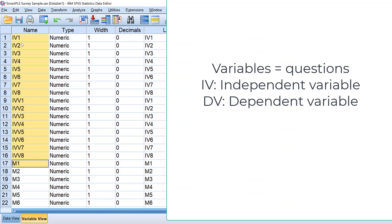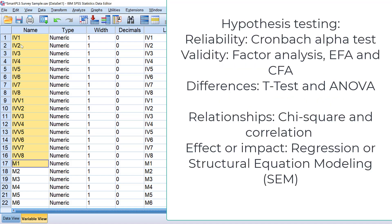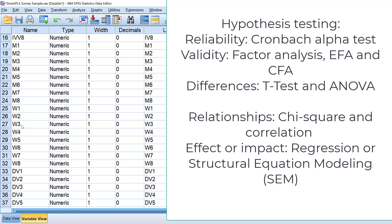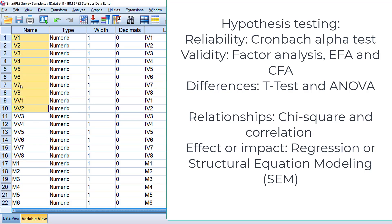The relationship among those dependent and independent variables is tested through what we call hypotheses, and the procedure is called hypothesis testing. For example, we can test the hypothesis that there is a relationship between motivation and hard work — these are two variables. For correlation, we don't specify which is dependent or independent. The second test is regression, which tests the impact or effect of one or many variables on an outcome variable.